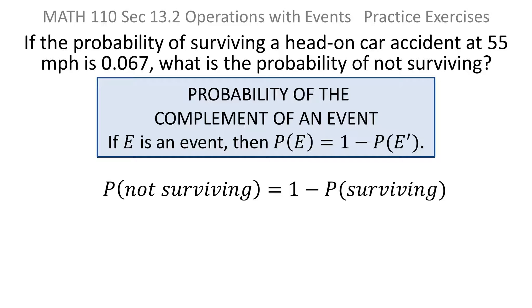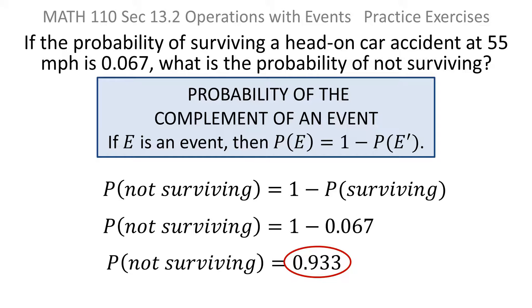So, in this context, I can say the probability of not surviving is 1 minus the probability of surviving. And that's useful because they told us that the probability of surviving was 0.067. So, using the complement rule, I can easily determine that the probability of surviving subtracted from 1 gives me the probability of not surviving.